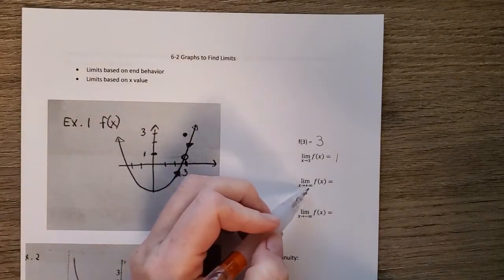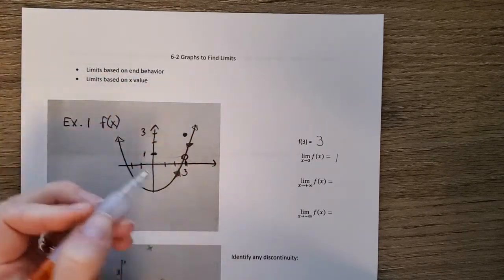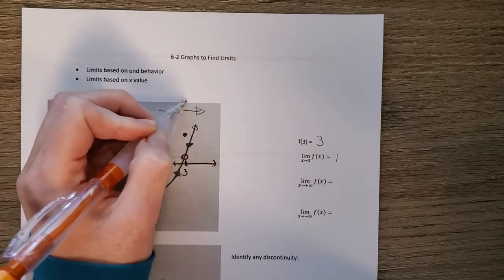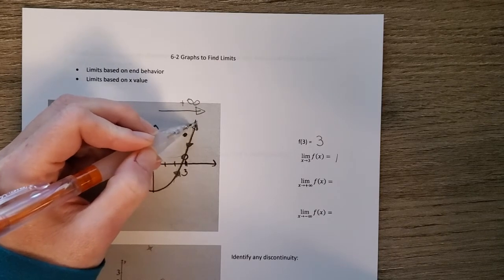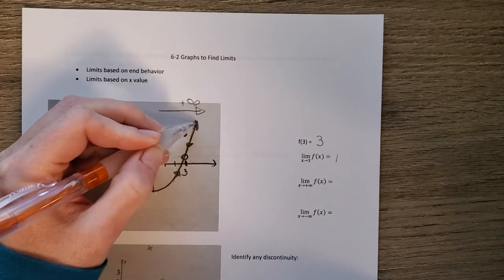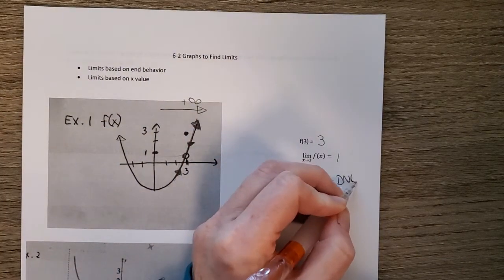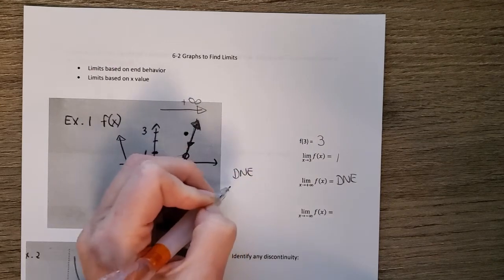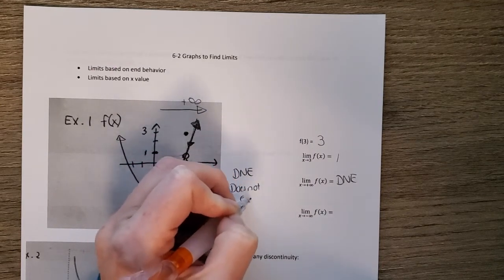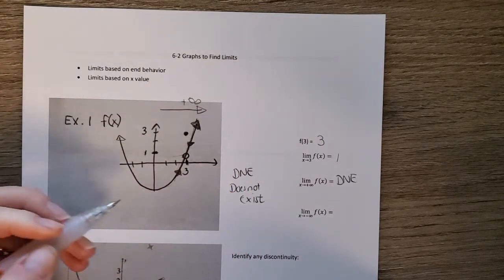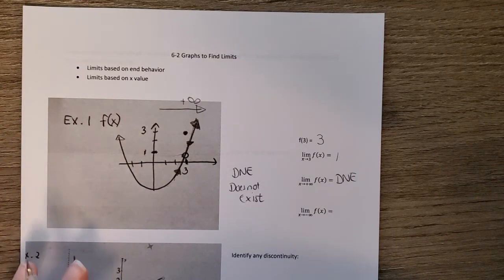Then we want the limit as x approaches positive infinity. Moving along the graph toward positive infinity, the function goes on forever with no stopping point. So there is no limit — we write D-N-E, which stands for 'does not exist.' Anytime the graph goes on forever, we write DNE.